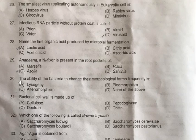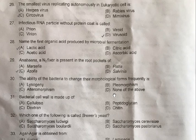Question 30: The ability of bacteria to change their morphological forms frequently is — A: Lysosomy, B: Pleomorphism, C: Alteromorphism, D: None of the above. The correct option is B, Pleomorphism, which is seen in bacteria like Proteus.